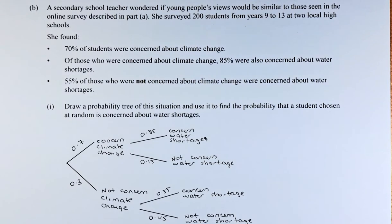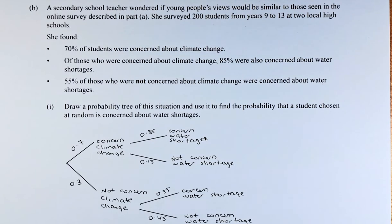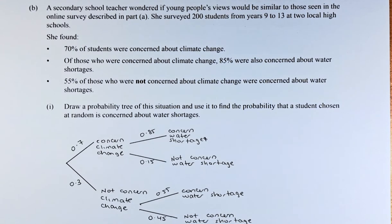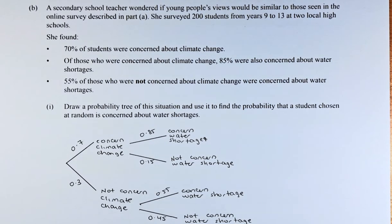Good day! In this video, we are going to try to solve Question 3B Part 1 of the 2022 NCEA Level 2 Probability Methods question. This question is a long question, so bear with me. A secondary school teacher wondered if young people's views would be similar to those seen in the online survey described in Part A.